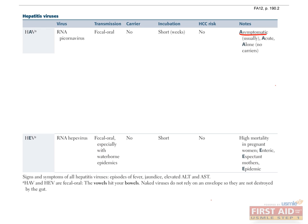Hepatitis E virus is serologically distinct from hepatitis A, but closely resembles HAV in its incubation and clinical presentation. It is self-limited, but can cause fulminant hepatitis in pregnant women, leading to sudden mortality.